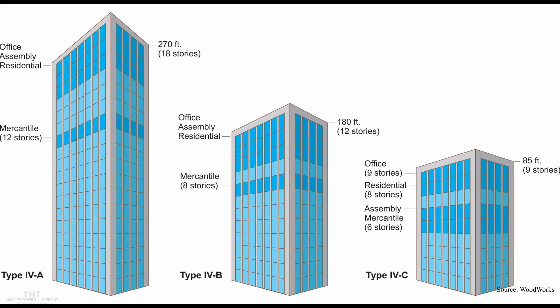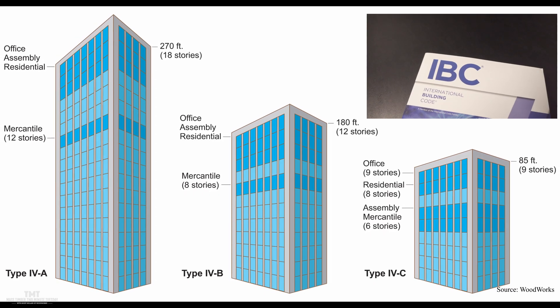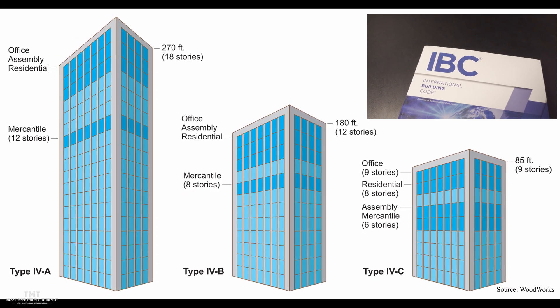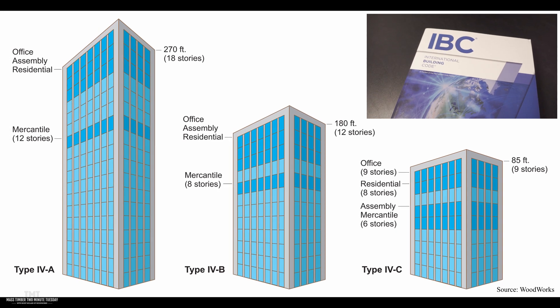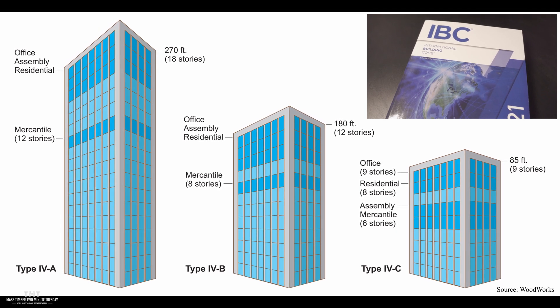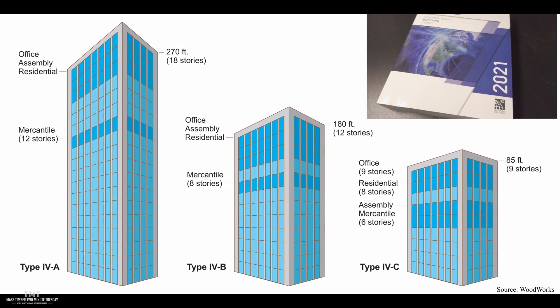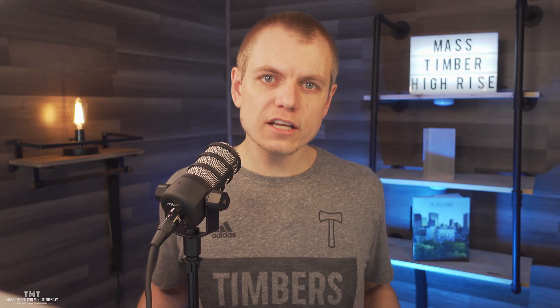This is where we turn to the new code provisions in the 2021 International Building Code, which introduced three new construction types — type 4A, type 4B, and type 4C — that allow building heights and sizes that exceeded those in the previous version of the building codes.